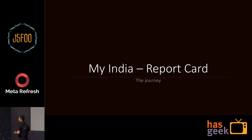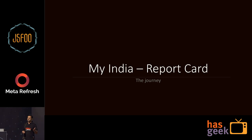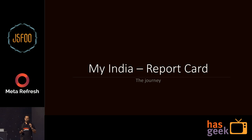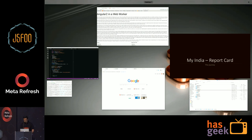Me and a bunch of guys started off trying to build an app called My India Report Card. What it does is go and hit the Indian government's open data website, data.gov.in, and pull up a bunch of APIs — APIs with regard to the attendance of our parliamentarians, the quality of water, the number of accidents in cities and such. We tried to build a dashboard out of it. Let me quickly show you what we have so far.